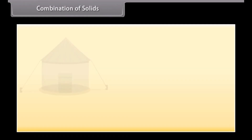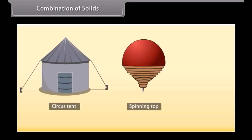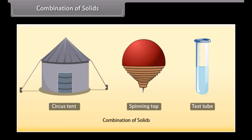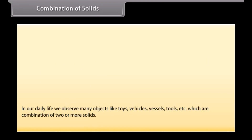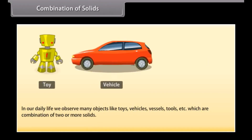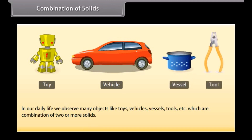Combination of solids. A circus tent is a combination of a cone and a cylinder. A spinning top is a combination of a hemisphere and a cone. And a test tube is a combination of a hemisphere and a cylinder. In the same way, in our daily life, we observe many objects like toys, vehicles, vessels, tools, etc., which are a combination of two or more solids. Let's learn to find their surface areas and volumes.